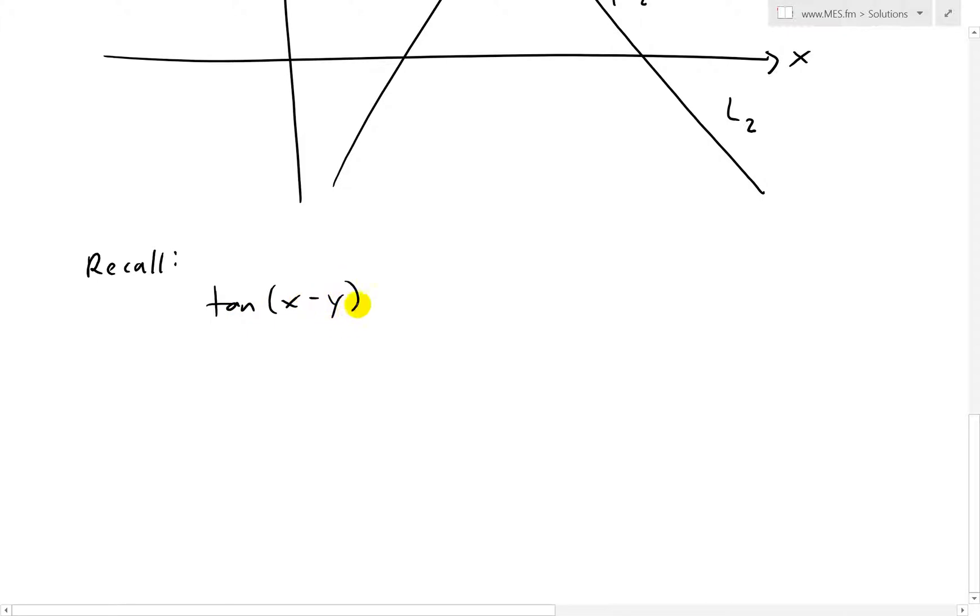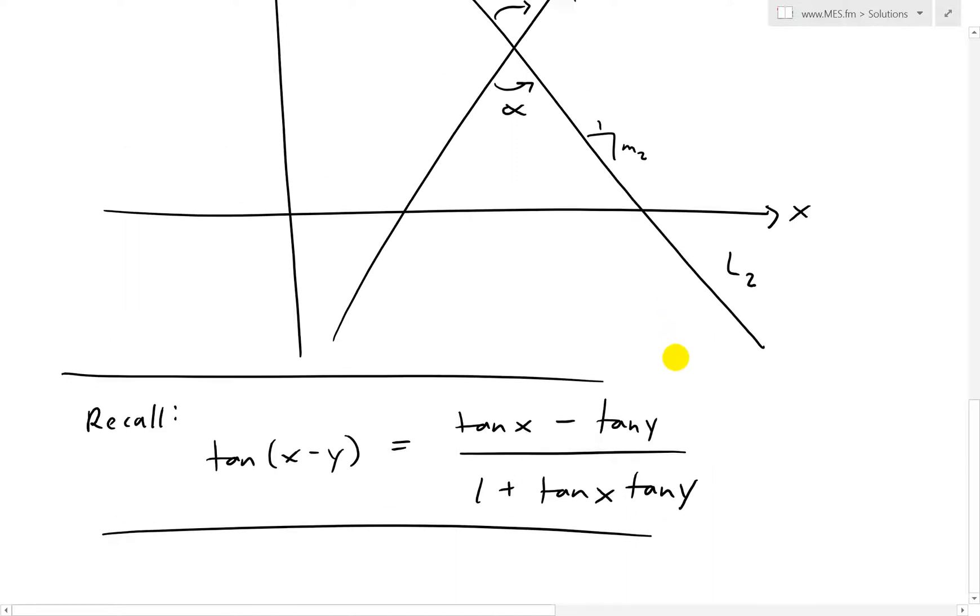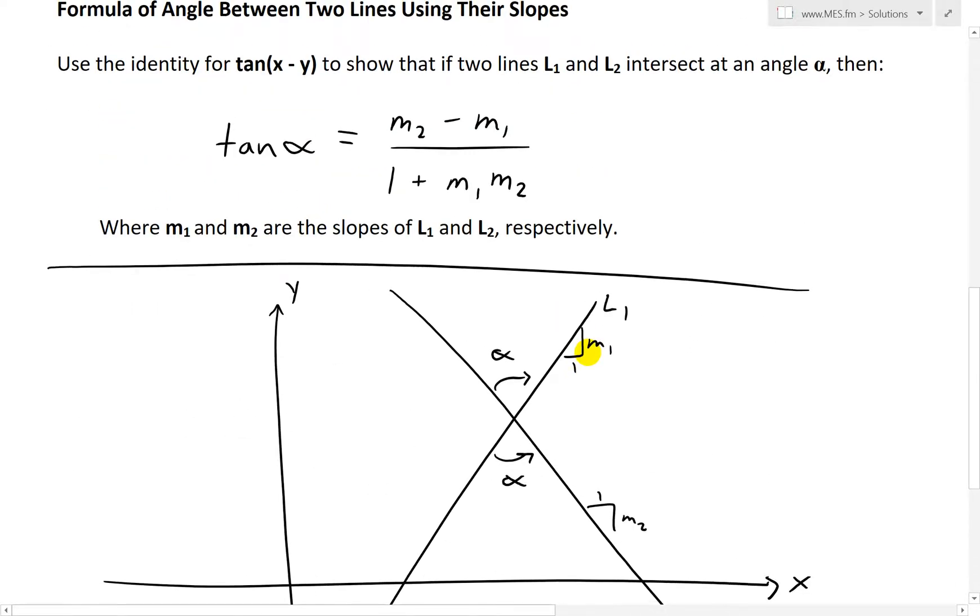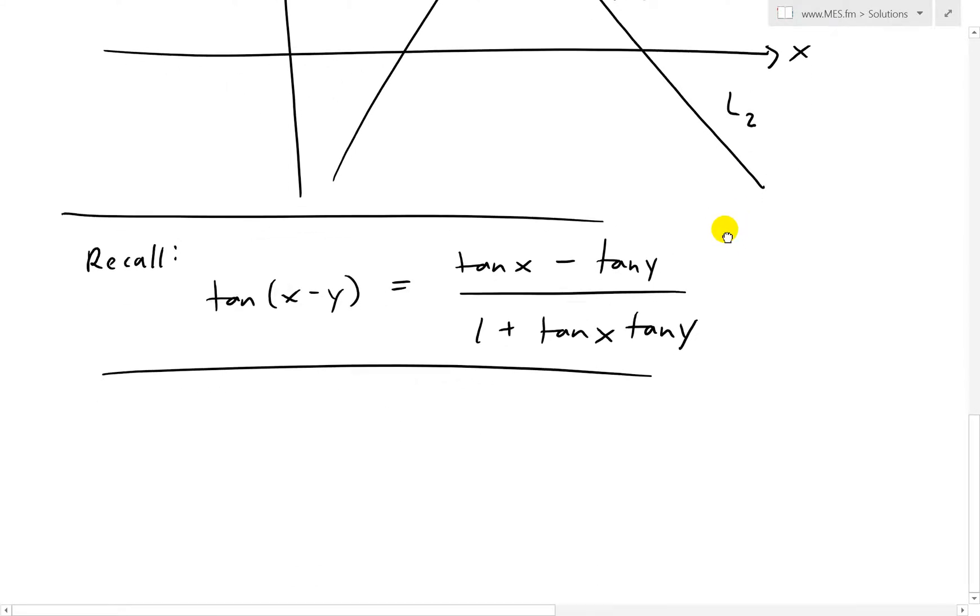First off, I'm going to recall the formula from my last video: tan(x - y) equals tan x minus tan y over 1 plus tan x tan y. Notice what's interesting is that this formula M2 minus M1 over 1 plus M1 M2 looks very similar to the tan identity.